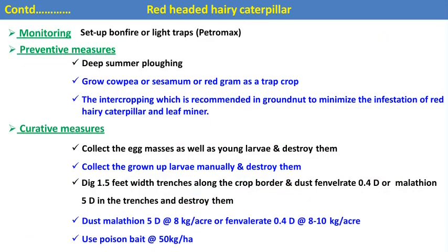Management practices against red hairy caterpillar: use bonfire or light traps; deep summer plowing; grow cowpea, sesamum, or red gram as trap crops; intercropping to minimize infestation. Curative measures: collect egg masses and young larvae and destroy them; collect late instar larvae; dig trenches around the crop field to prevent migration from one field to another. Dust with malathion dust and phorate dust; use poison bait technique.